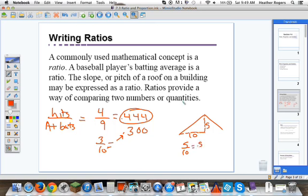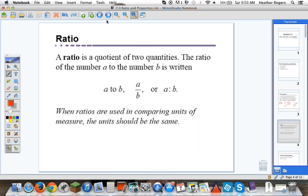Ratios provide a way of comparing two numbers or quantities. So here we're comparing rise over run, here we're comparing hits to at-bats. A ratio is just a way of comparing two numbers or quantities.